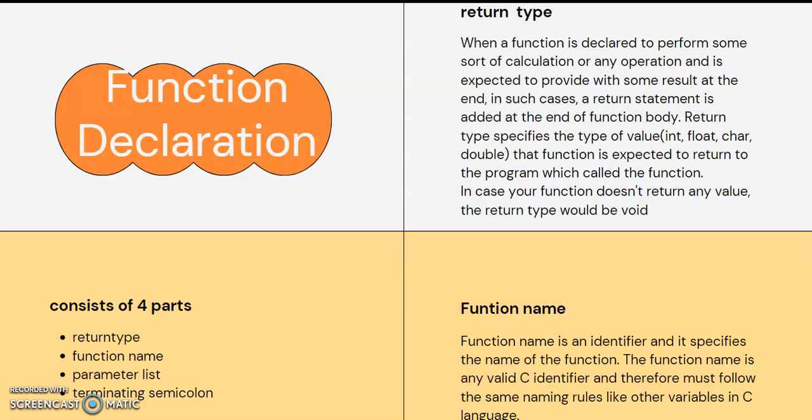The second part: if a function is declared to perform a particular task, then the result will be produced by the return statement. The return statement will be added to the function. If you have an add function, you will need to provide a return value.